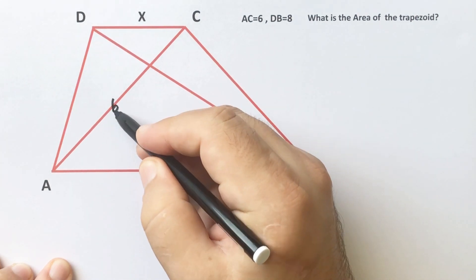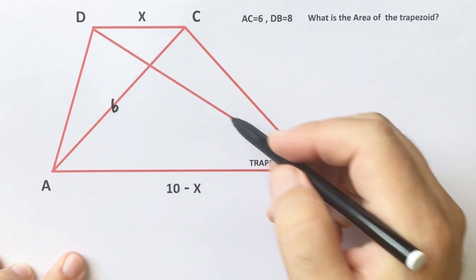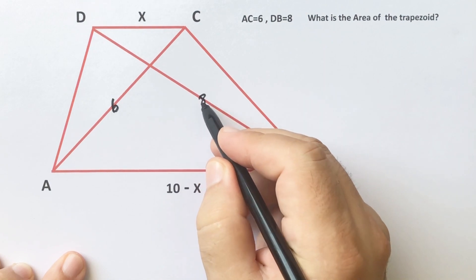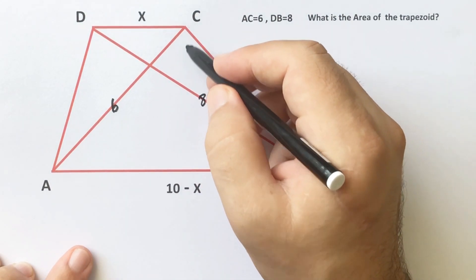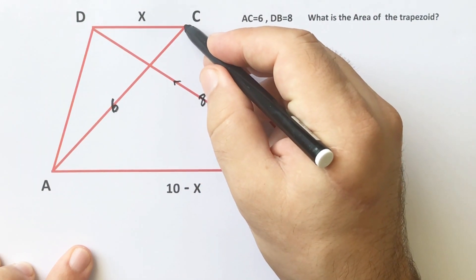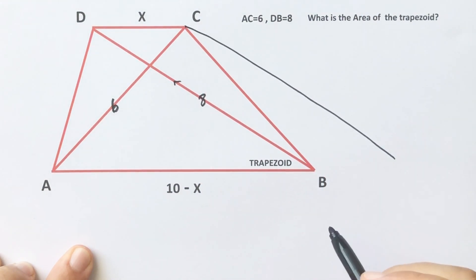First up, this length is 6 and this length is 8. If we draw a parallel to DB like this...